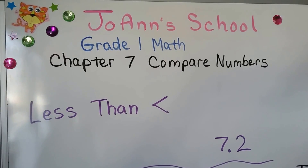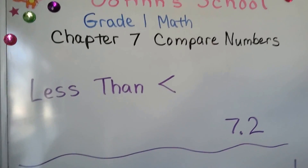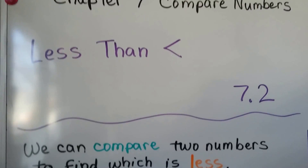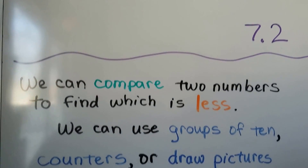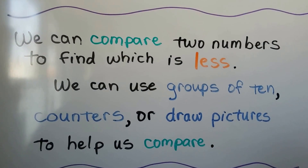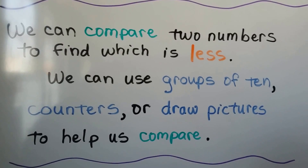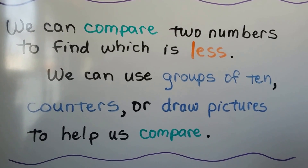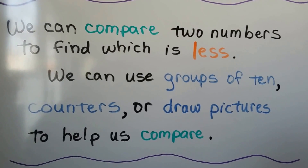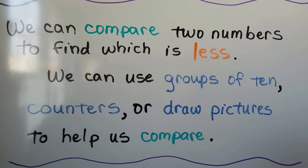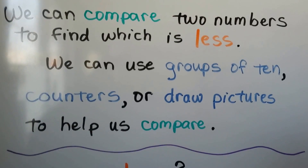Lesson 7.2. We can compare two numbers to find which is less. We can use groups of ten, counters, or draw pictures to help us compare. We can also use their place value.